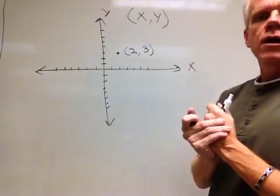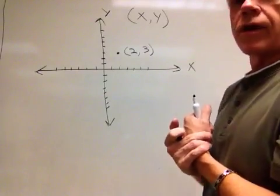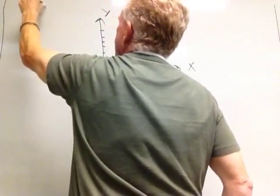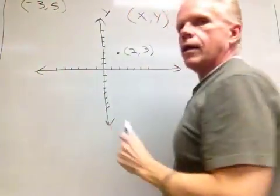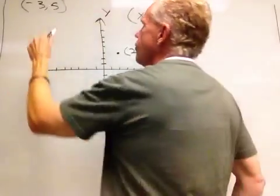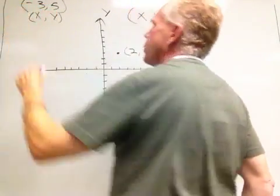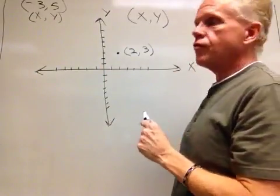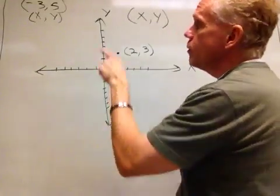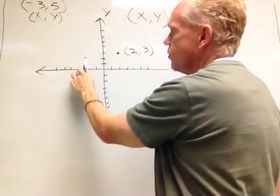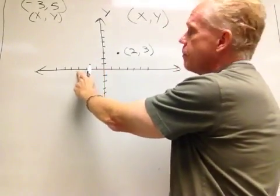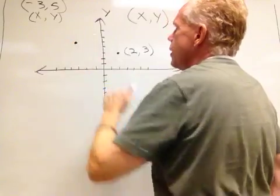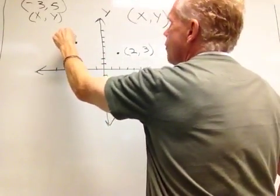Let's take a look at another point, negative 3 comma 5. So what that would mean is the x-value here is negative 3 and the y-value is positive 5. Starting from the center of the rectangular coordinate system, which by the way is known as the point of origin at (0, 0), we would count out on the x-axis 1, 2, 3 spaces and then count up on the y-axis 5 spaces. So approximately right here we have negative 3 comma 5.